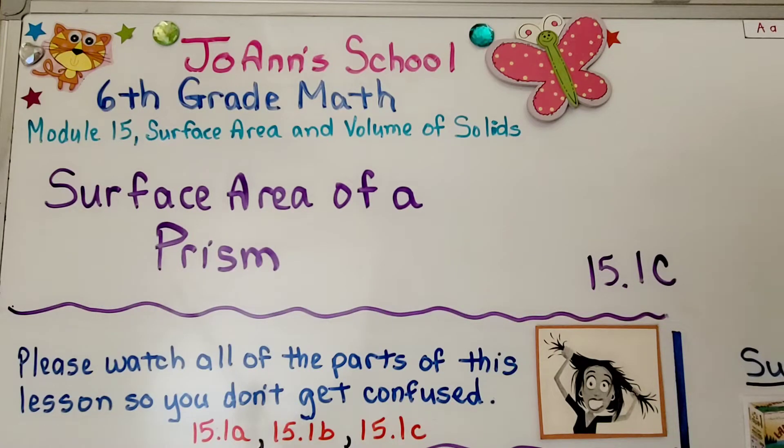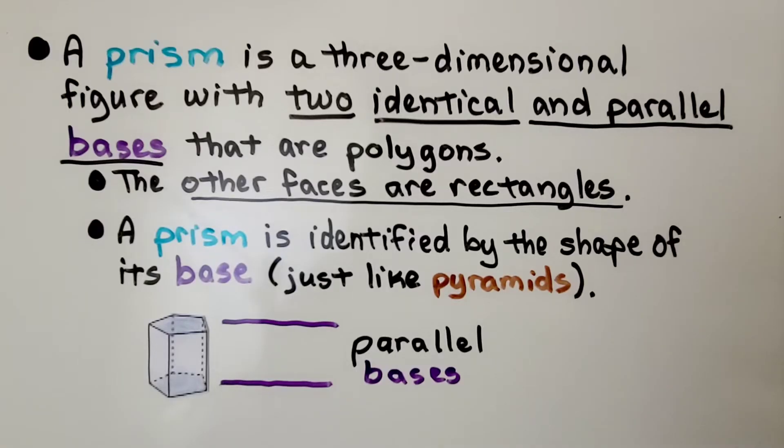Lesson 15.1c, Surface Area of a Prism. A prism is a three-dimensional figure with two identical and parallel bases that are polygons. The other faces are rectangles.